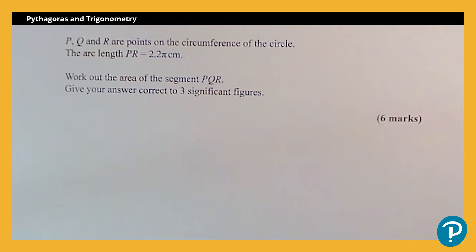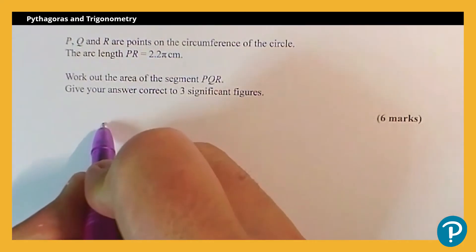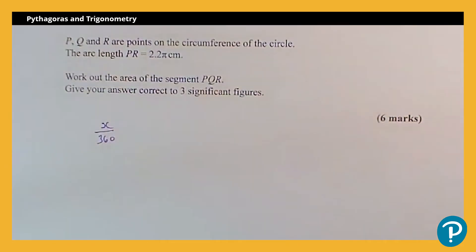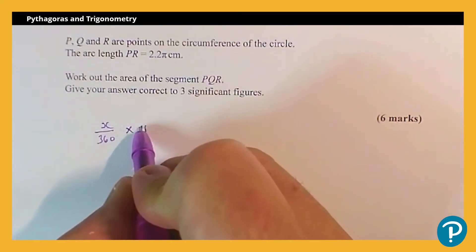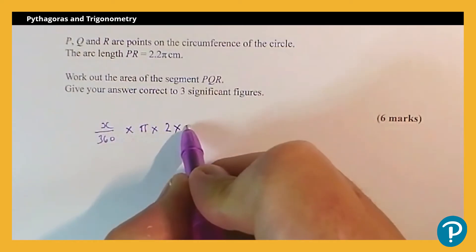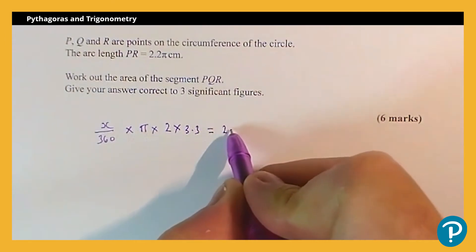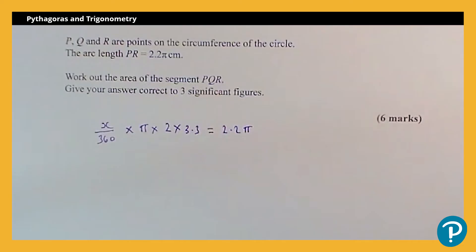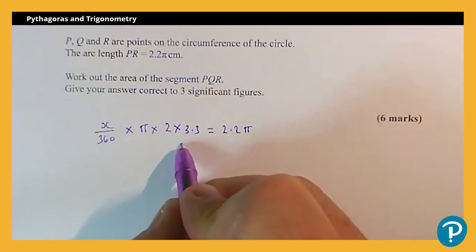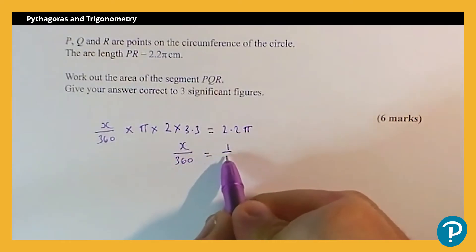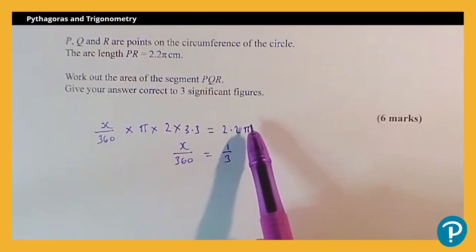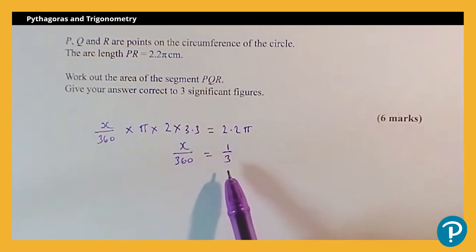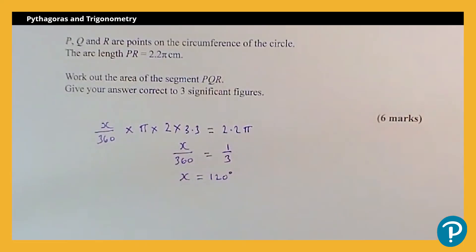First job: we know that the arc length is just a proportion of the circumference of the circle. So X over 360 — that's the proportion of the circumference — times pi times 2 times the radius, so 2 times 3.3, is equal to 2.2 pi. Rearranging gives me X over 360 equals a third. I've done 2.2 pi divided by pi times 2 times 3.3, which gives a third. So X must be 120 degrees. I now know the angle POR from the diagram.